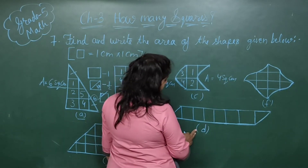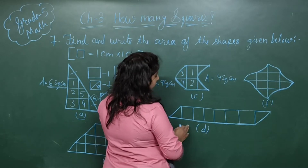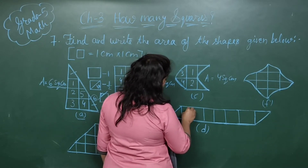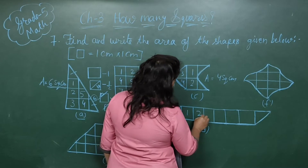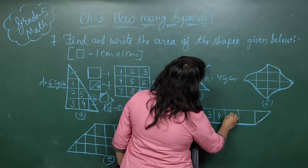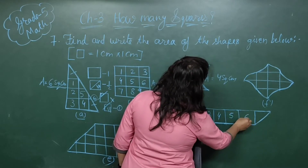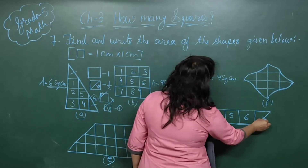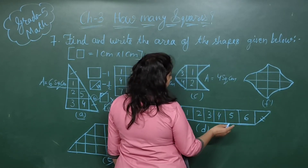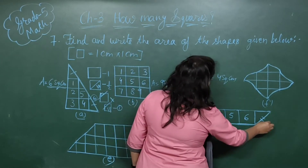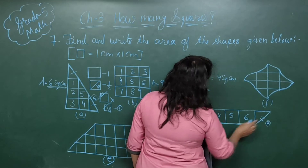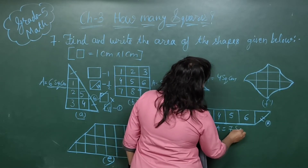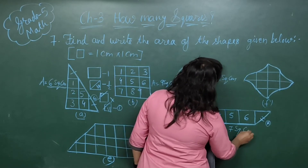Picture number D is very simple. Count the complete squares first: 1, 2, 3, 4, 5, 6. Then there are two halves — half and half make 1 more. So you count it as 7. The area is equal to 7 square centimeters.